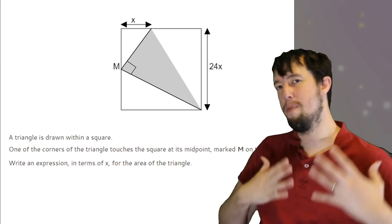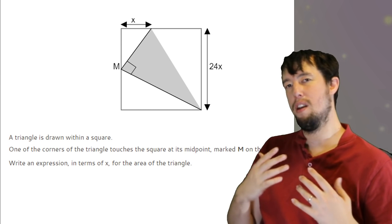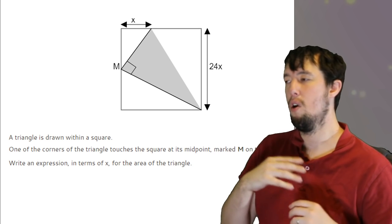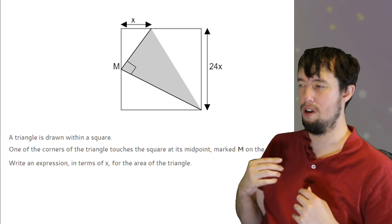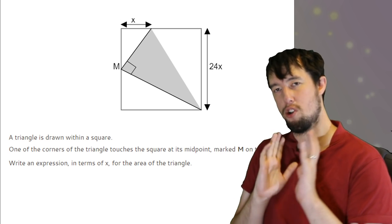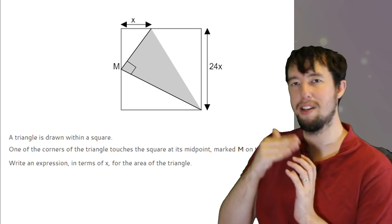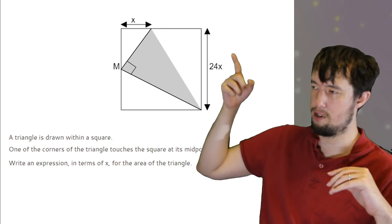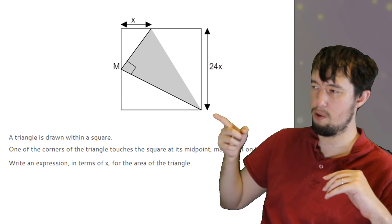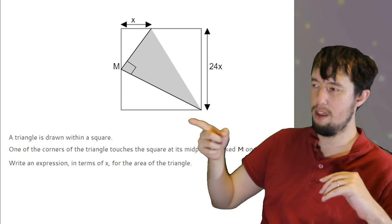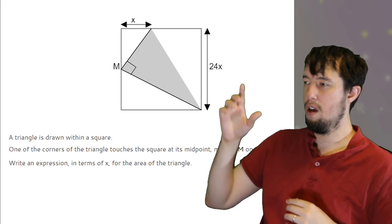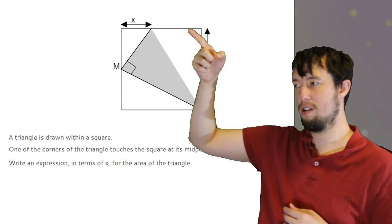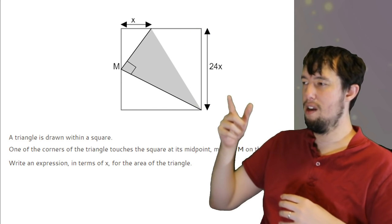You're going to have shape and algebra in some way. You could be asked to find the area or whatever, the area equals this, find out what X is, or you could be asked to find an expression. With this type of question, it's always helpful just ignoring what the question is and just writing down what you know. It's a square, so if that's 24X there, then this at the bottom will be 24X. If that top left one is X, then this one's going to be 23X because it has to add up to 24X.